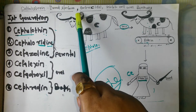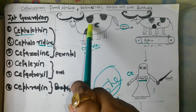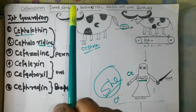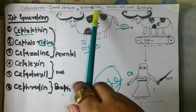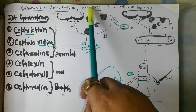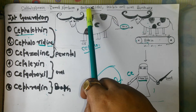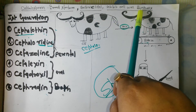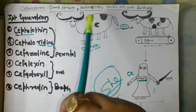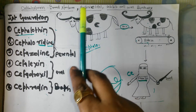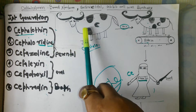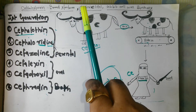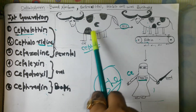So cephalosporins are broad spectrum and bactericidal — they kill, not just static. They inhibit cell wall synthesis, because this character is very strong and can hit the wall. He is the brother of the buffalo, very fat — 'Cifalo' — and he wants to be thin.